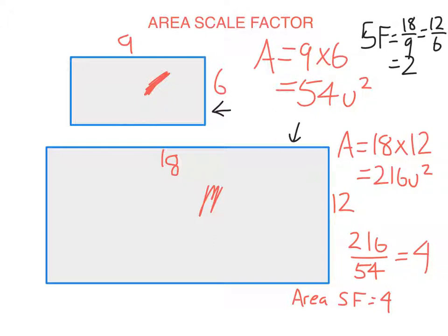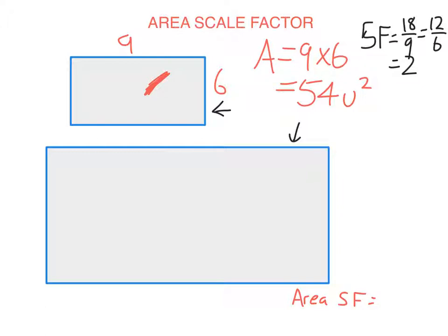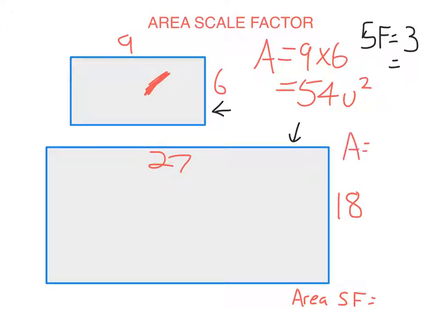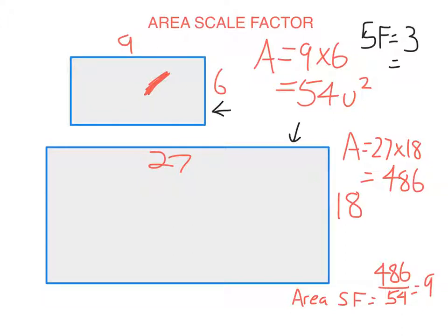Let's have a look at what would happen if I tripled the sides. If I tripled the length of each side, the length of the big rectangle would now be 27 (9 times 3), and this side would be 18. So the linear scale factor is now 3. The new area would be 27 times 18, which equals 486. So the area scale factor is 486 divided by 54, which equals 9. If I multiply the length of each side by 3, the area is multiplied by 9, not by 3.